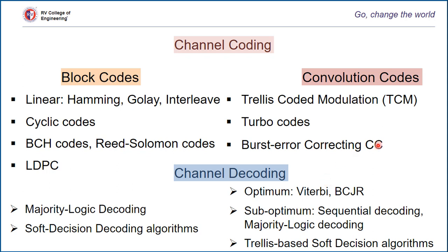In the next video, we will begin with an example that shows how coding can help us achieve lower error probabilities in digital communications. The next video is going to be very generic and we are going to see how channel coding in general promises us in achieving lower error probabilities. Thank you.